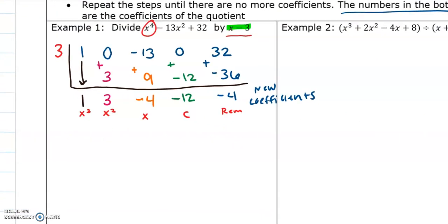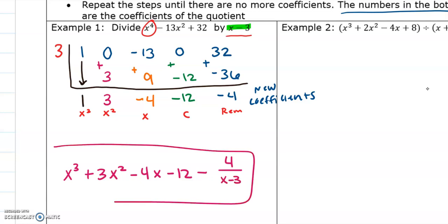So when I write my answer, I have x to the third, coefficient is a 1, plus 3x squared, minus 4x, minus 12. Remainder is negative, so minus 4 over the x minus 3 over the divisor. And then that is your final answer.